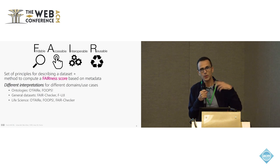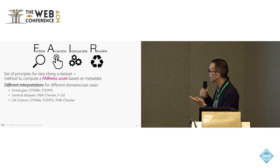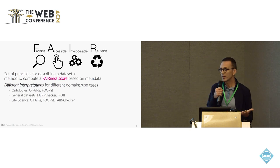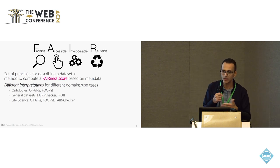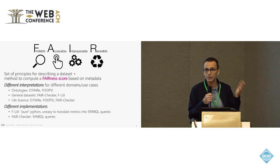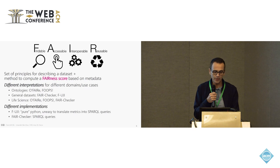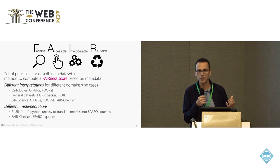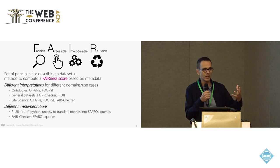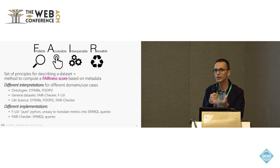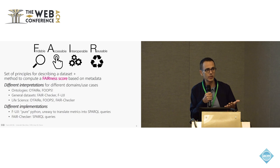You can interpret those principles in different manners and different contexts. For instance, there are tools that measure the fairness of ontologies, like OFER and FOOPS. There are tools for more general datasets, like FairChecker and Fuji, and some are dedicated to specific domains like life sciences. There are also different implementations: Fuji is a pure Python implementation, while FairChecker consists of a set of SPARQL queries. In our case, we wanted a fairness measure within the context of GINDEX, based on RDF descriptions and SPARQL queries. So we reused and ported all the SPARQL queries from FairChecker to run within GINDEX.